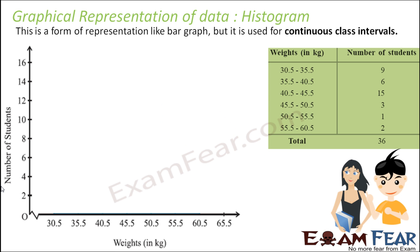This kind of bar graph for continuous class interval is called a histogram. The bar graph was used for ungrouped frequency distribution table, but if you have a grouped frequency distribution table, there is continuous and discontinuous. Typically for continuous class interval, we use a histogram. It is just like a bar graph but used for continuous class interval, and the concepts are different.